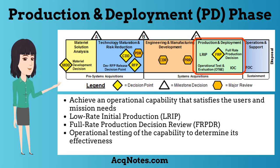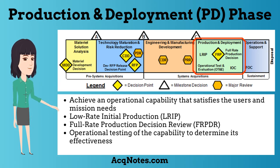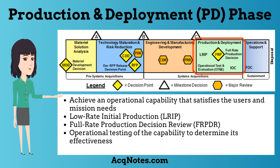The fourth phase is the production and deployment phase. The purpose of this phase is to achieve an operational capability that satisfies the users and mission needs. This phase consists of two efforts: low-rate initial production and full-rate production decision review. The phase will also include operational testing of the capability to determine its effectiveness.